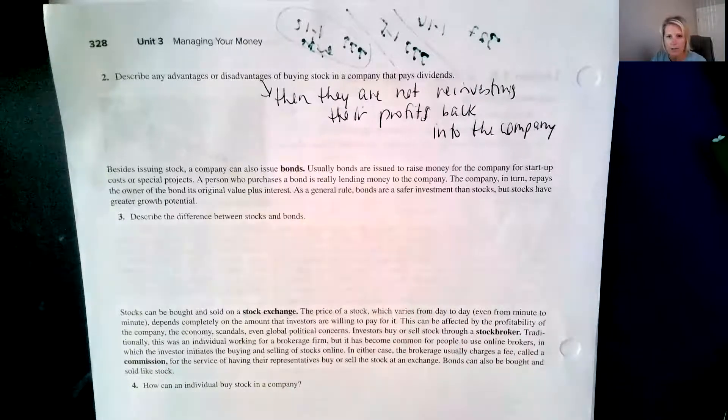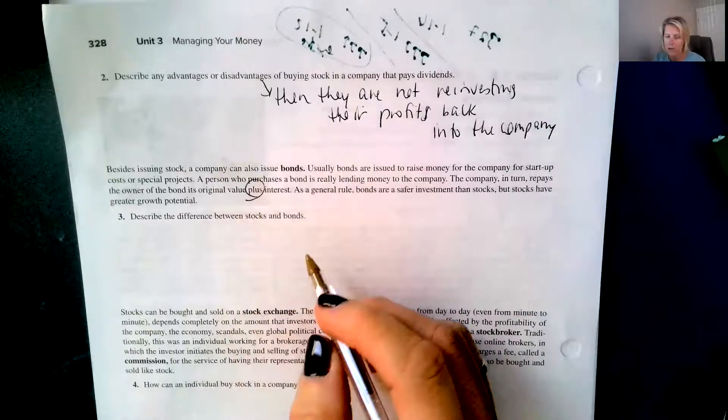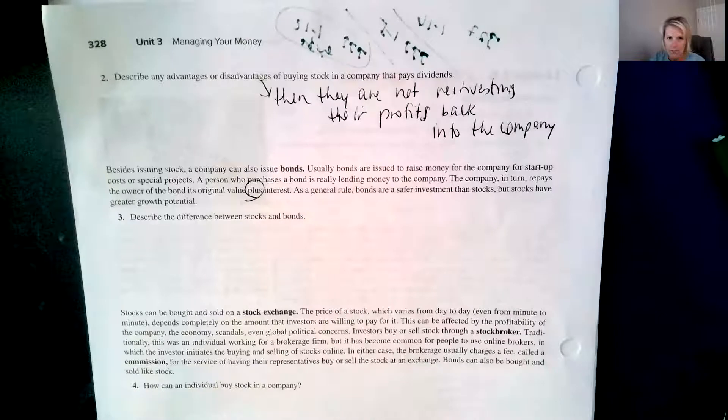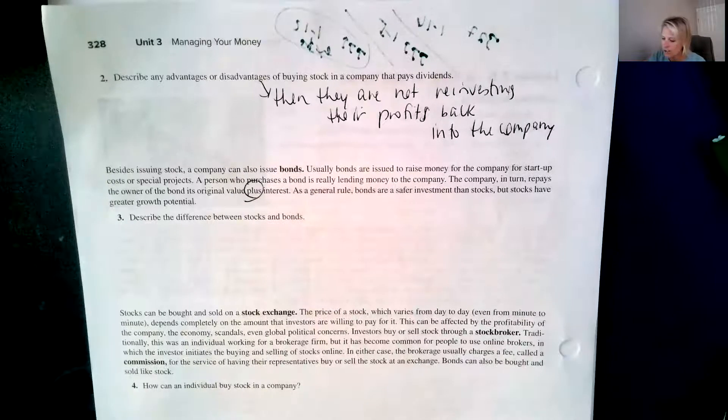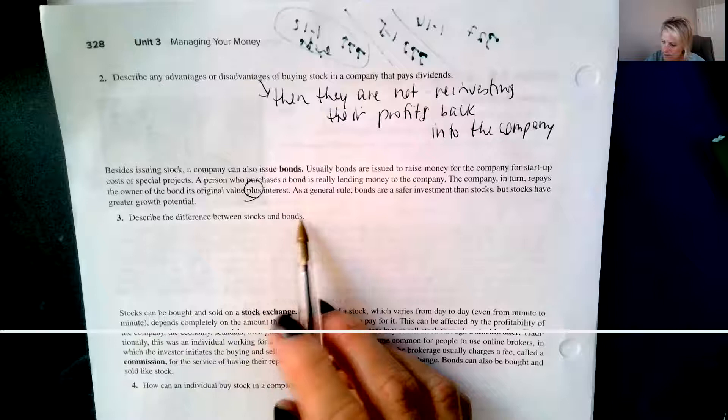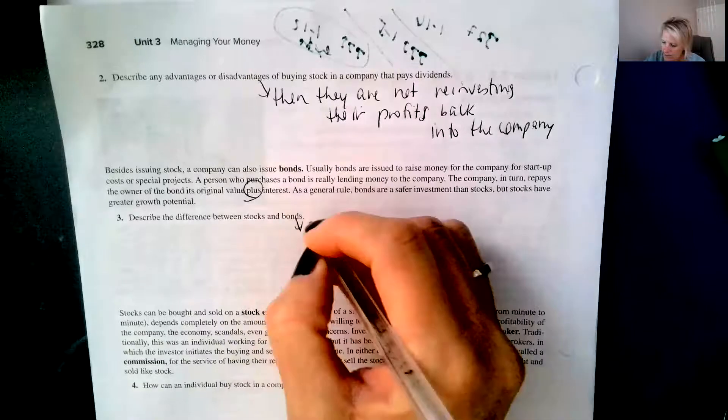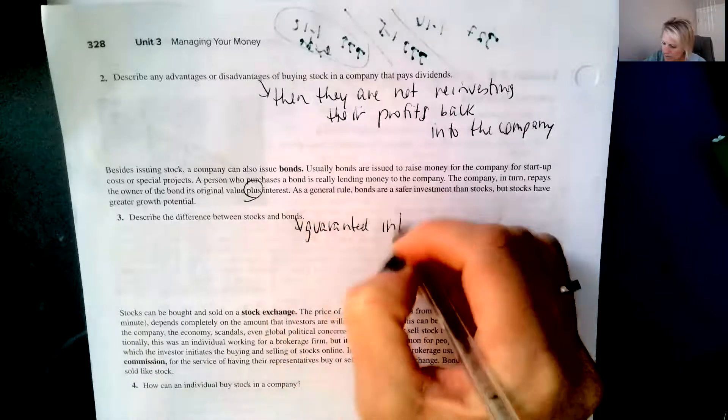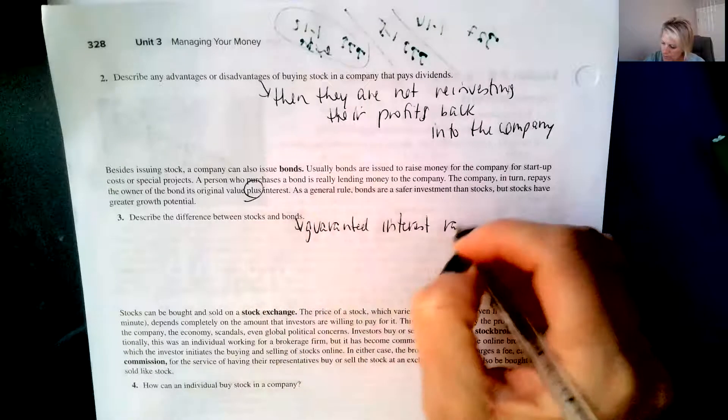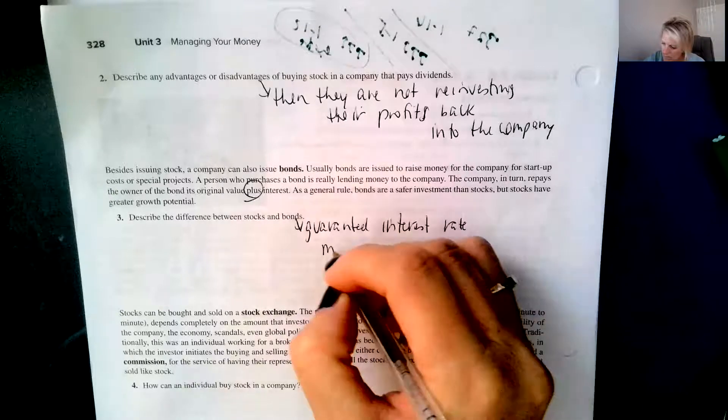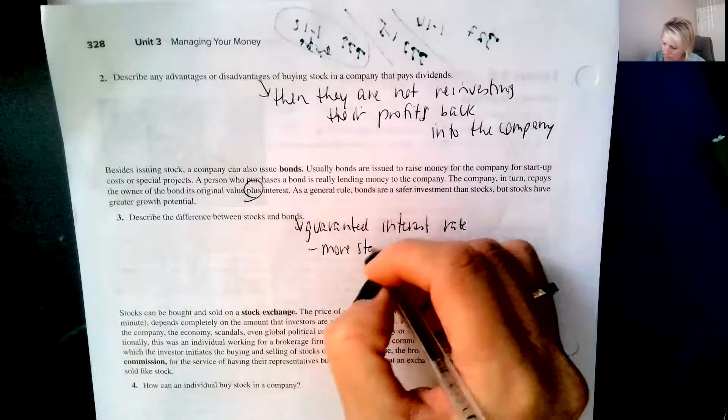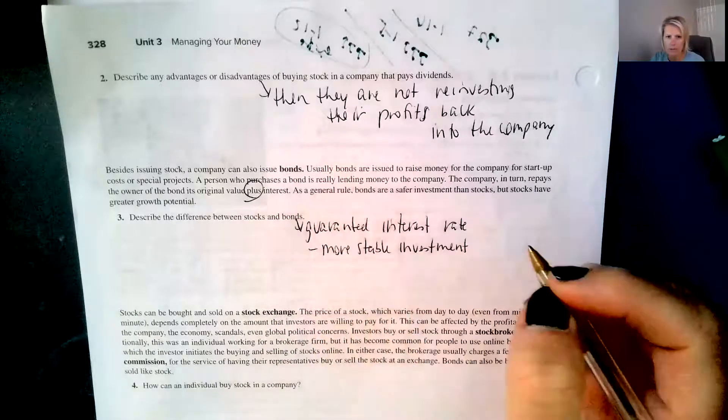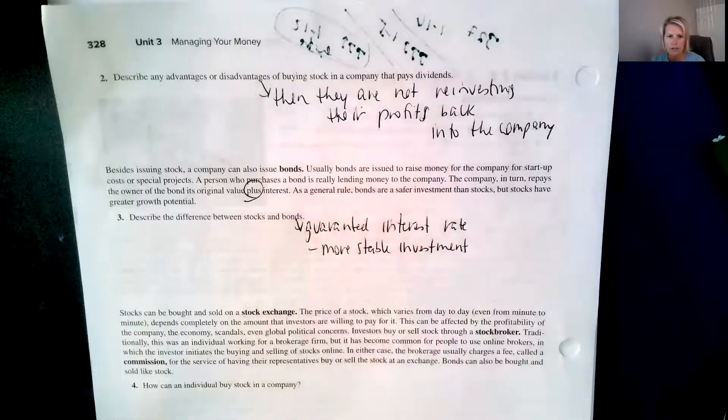As a general rule, bonds are a safer investment than stocks, but stocks have greater growth potential. So stocks and bonds are different. You're getting a guaranteed interest rate, so they're more stable investment. That a stock, you can't just take your money out right away. That's one negative.